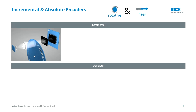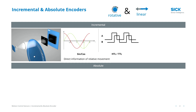An incremental encoder gives you a relative position information. This means every measuring step is counted on its own, relative. A PLC needs to count each step in order to calculate the speed or relative position.